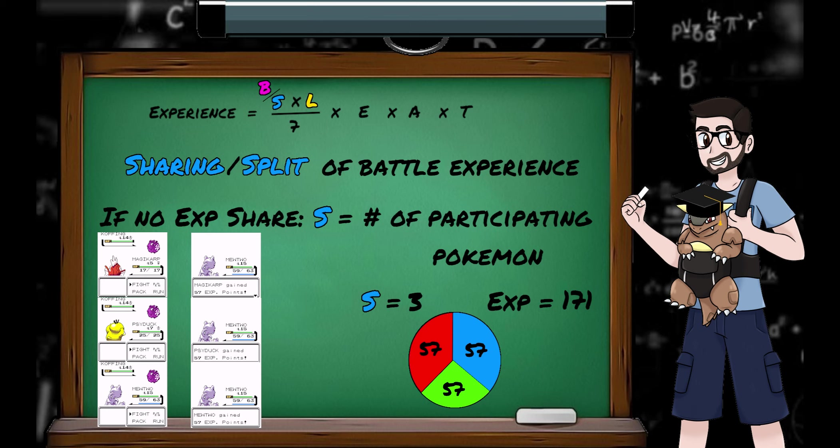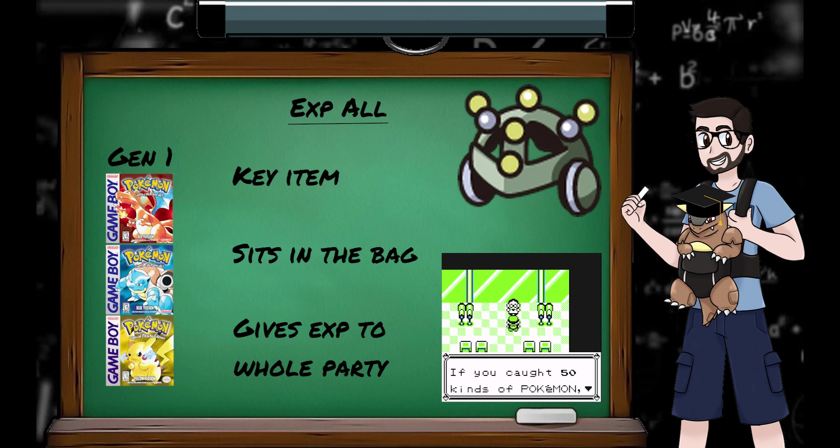Things get a smidge more complicated when XP share comes into play. In generation 1, the XP share was a key item called XP all, that's given to the user if they've caught 50 Pokemon. As held items didn't exist in generation 1, the XP all just sits in the bag.